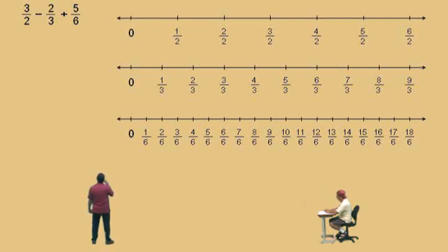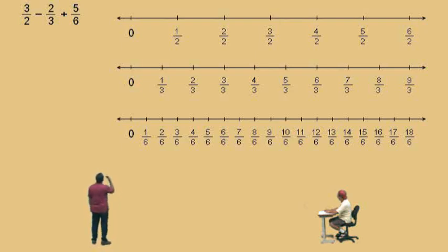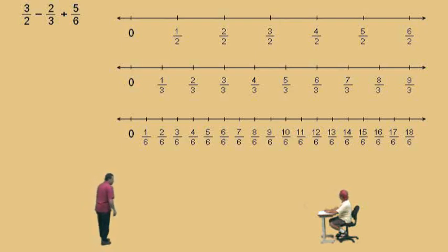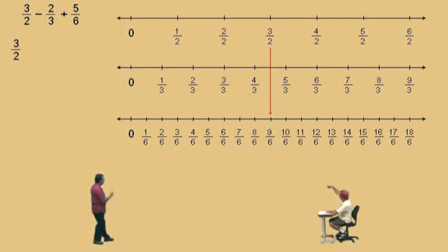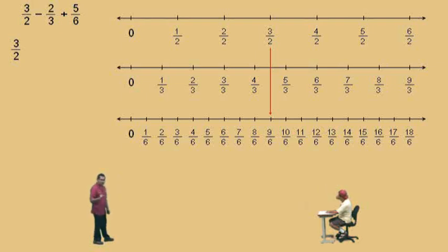3 halves subtract 2 thirds plus 5 sixths. Now, this is the problem we finished in the last video, right? But we were doing it on a number line. Now we're going to show how to change denominators using arithmetic. We're going to start with 3 halves. If we look at the number line, 3 halves can be written with a denominator of 6. We know 3 halves is the same as 9 sixths. But how do we use arithmetic to do this?